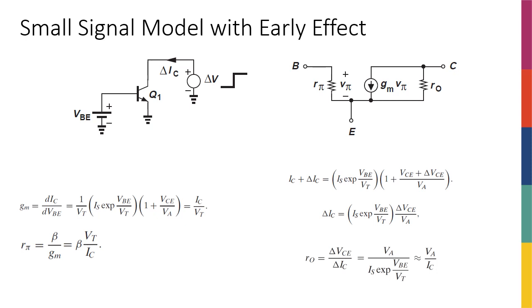The last thing to check for early effect is how it actually changes our small signal model. So whatever we discussed up to now was about DC analysis and how the transistor as a voltage-controlled current source changes. But does early effect change our small signal model?